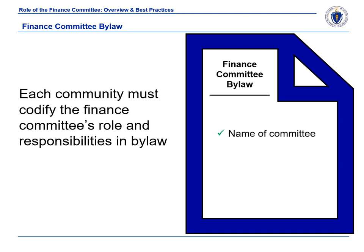First, the committee's name, which might be the finance, appropriations, warrant, or advisory committee. Second, the number of members, which should be an odd number. Third, whether committee members are appointed or elected. In towns where members are appointed, this authority usually falls to the select board, moderator, or some other combination thereof.